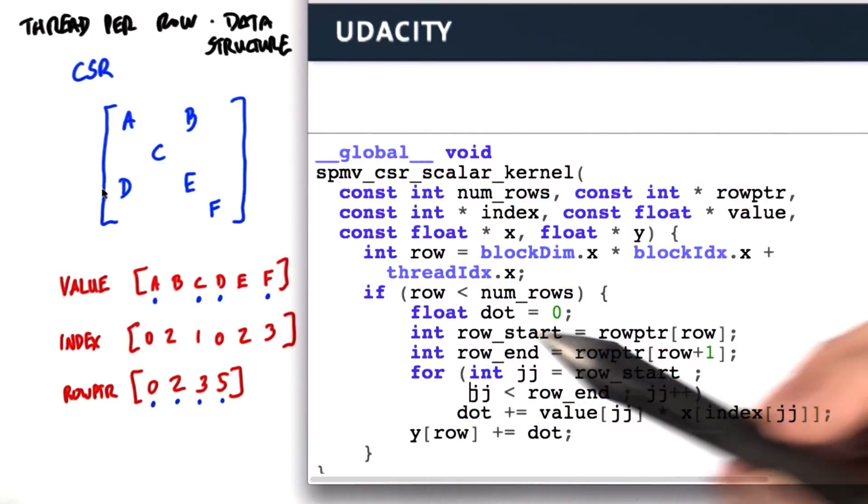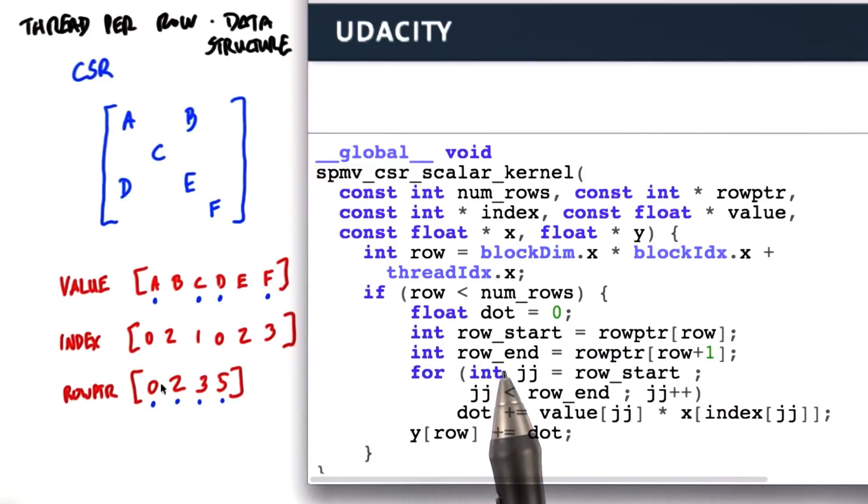So we're going to start with d. We're going to start at the beginning of a row and we're going to go up to, but not including, the first element of the next row. So that's this loop right here.